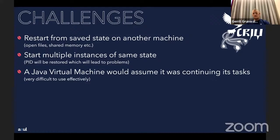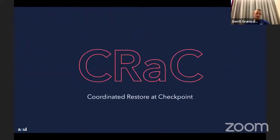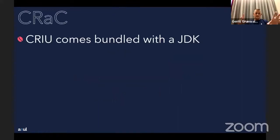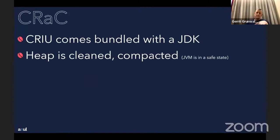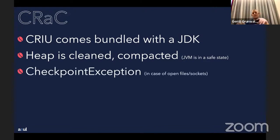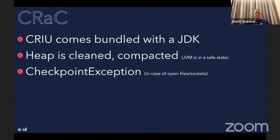That's where CRaC comes in — Coordinated Restore Checkpoint. The 'coordinated' part is key: CRIU, the Linux project, comes bundled with the JDK. What CRaC offers to the JVM is that the heap is cleaned and the JVM is compacted so it's in a safe state when checkpointed. There's also a checkpoint exception — if you try to create a checkpoint and there are open files or unclosed web connections, it won't silently fail but will give you a checkpoint exception.